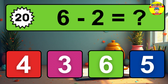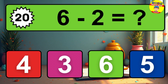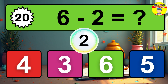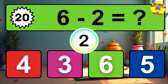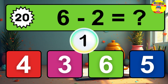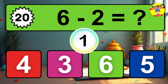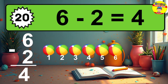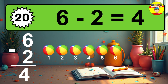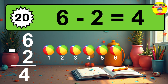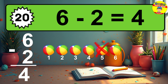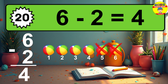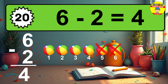Question 20. 6 minus 2 equals what? So the answer is 6 minus 2 is 4. Let's count it. 1, 2, 3, 4.